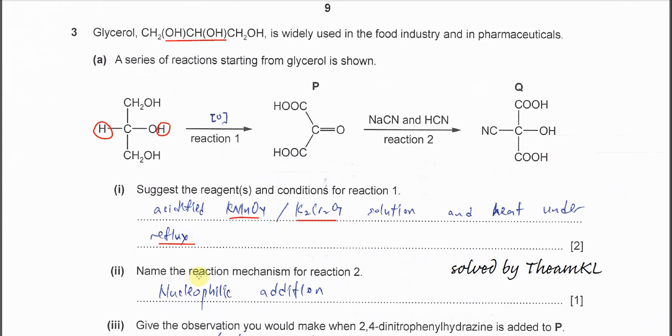Part 2: Name the reaction mechanism for reaction 2. Reaction 2 we know that uses potassium or sodium cyanide with HCN. So it's going to be an addition, nucleophilic addition. So we will form these products. The name of the reaction mechanism must be nucleophilic addition.